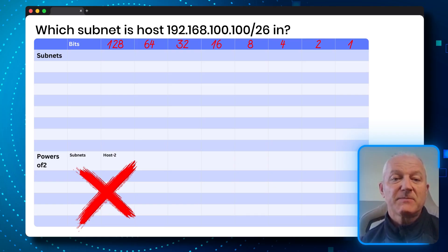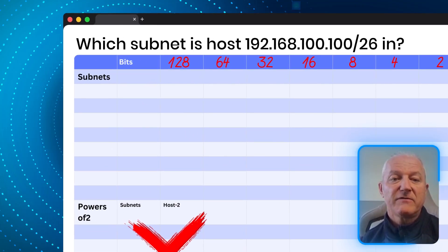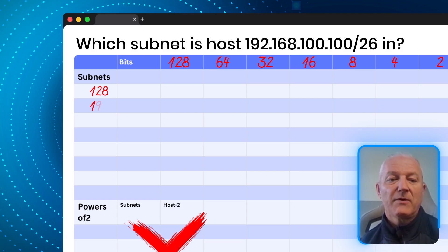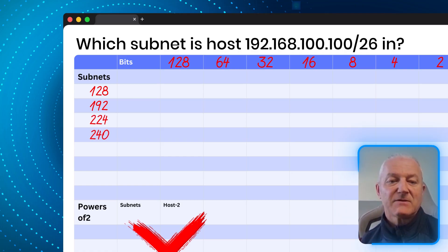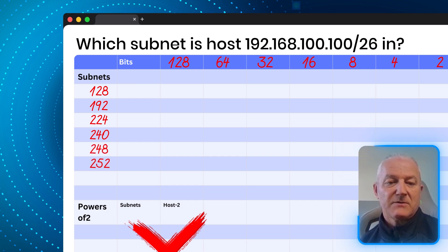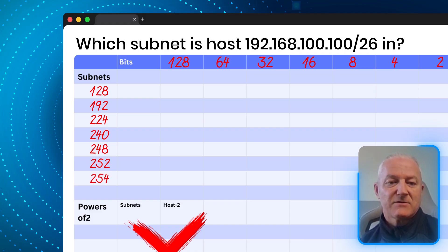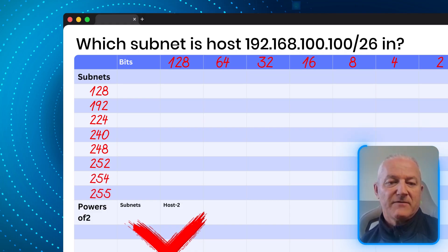Then fill in your possible subnet values. Starting from 128, add 64 to get 192, add 32 to get 224, add 16 to get 240, add 8 to get 248, add 4 to get 252, add 2 to get 254, add 1 to get 255. So you've got this complete chart ready to go before the exam clock starts.